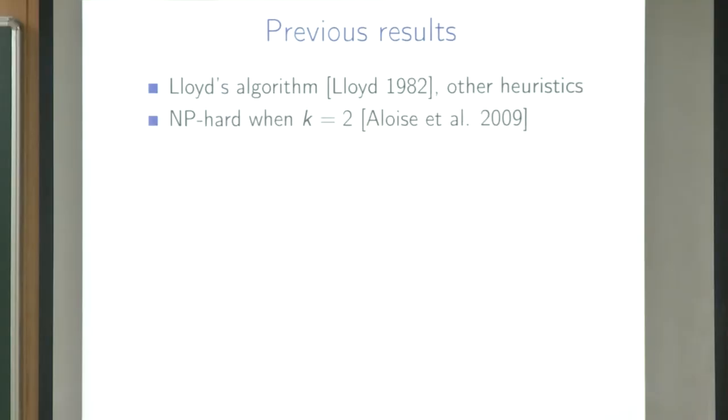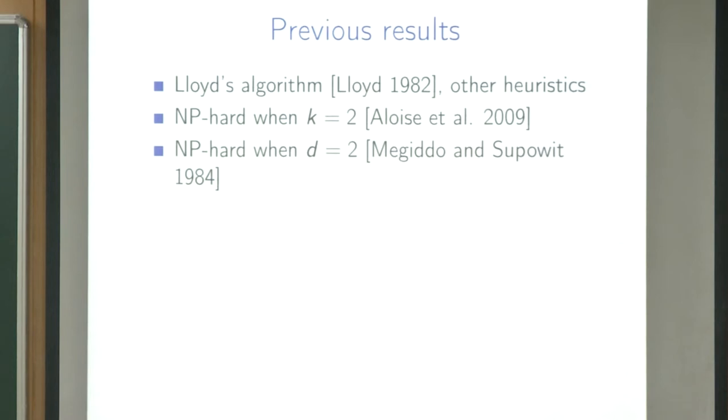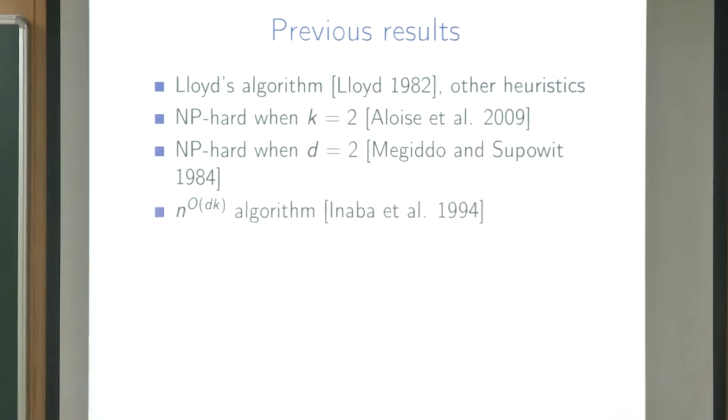From the complexity point of view, this problem is not that easy. We know it's NP-hard even for two clusters, and NP-hard even in the plane. A good thing is it's somewhat solvable if we have a really small dimension and a really small number of clusters — there is an algorithm running in time n^{O(dk)}, given by Nabil, based on computational algebraic geometry. It's not really fast, so I don't think people use it in practice.